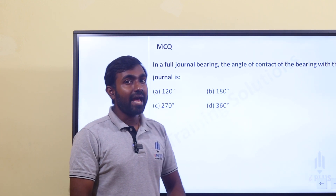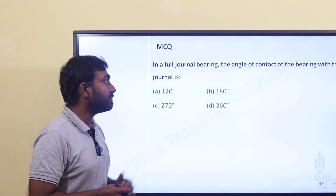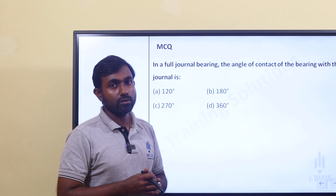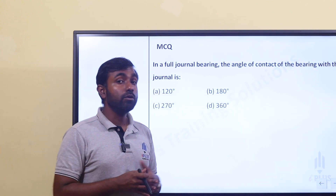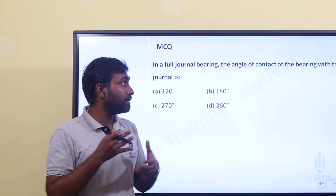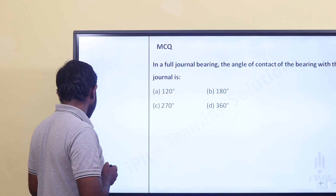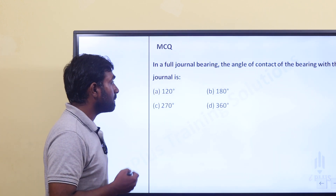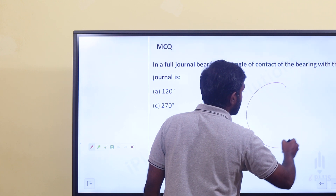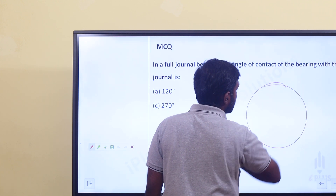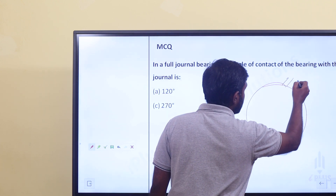Next question: in a full journal bearing, the angle of contact of the bearing with the journal is dash. In a full journal bearing, what is the angle of contact? We have a fixed bush inserted.